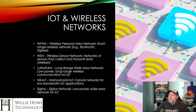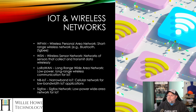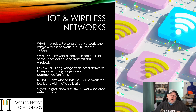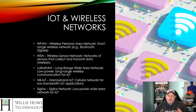Then we have IoT and wireless networks. You've got a WPAN, a wireless personal area network — a short-range network that can use Bluetooth or Zigbee. You've got a wireless sensor network, or WSN — networks of sensors that collect and transmit data wirelessly. You have LoRaWAN, a long-range wide area network — low-power, long-range communication for IoT, usually running in the sub-1 gigahertz frequency range. LoRaWAN gives you a lot of battery life because these devices only kick on occasionally and transmit small amounts of data — a door sensor, temperature sensor, driveway sensor, you name it.